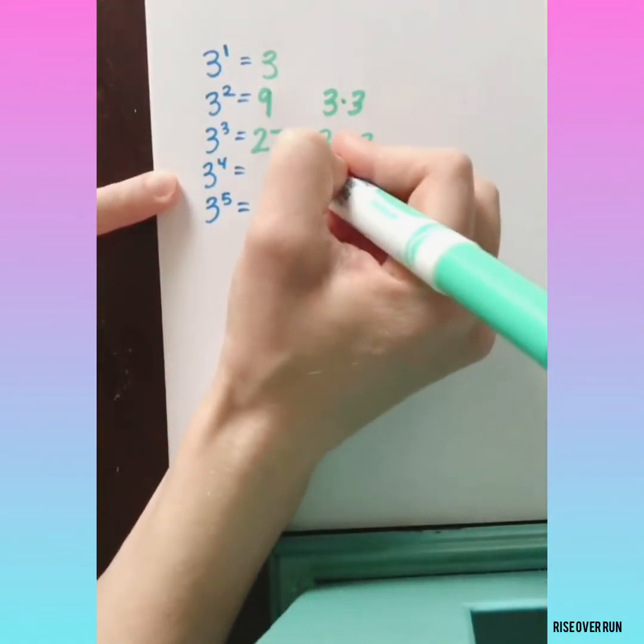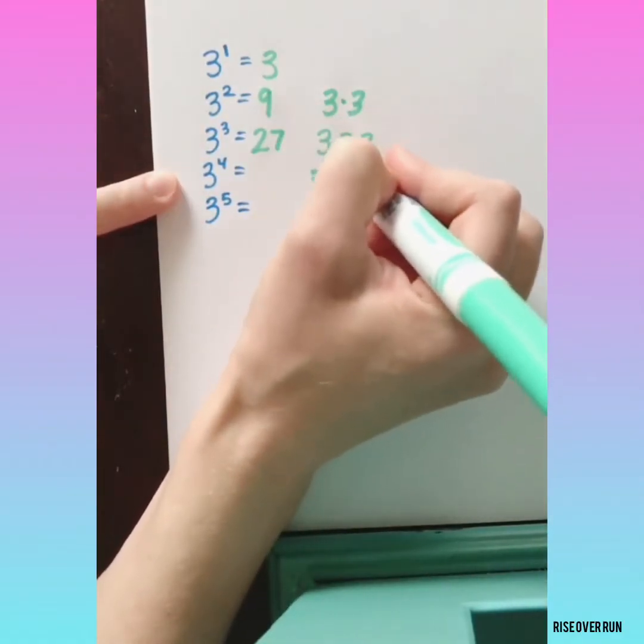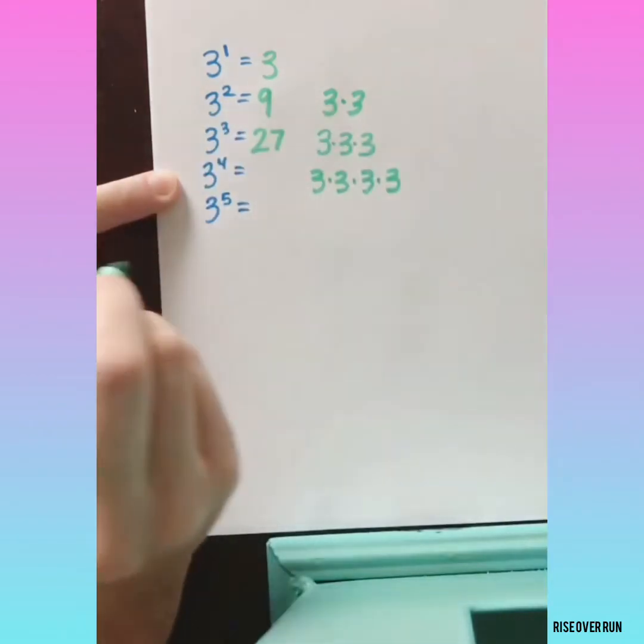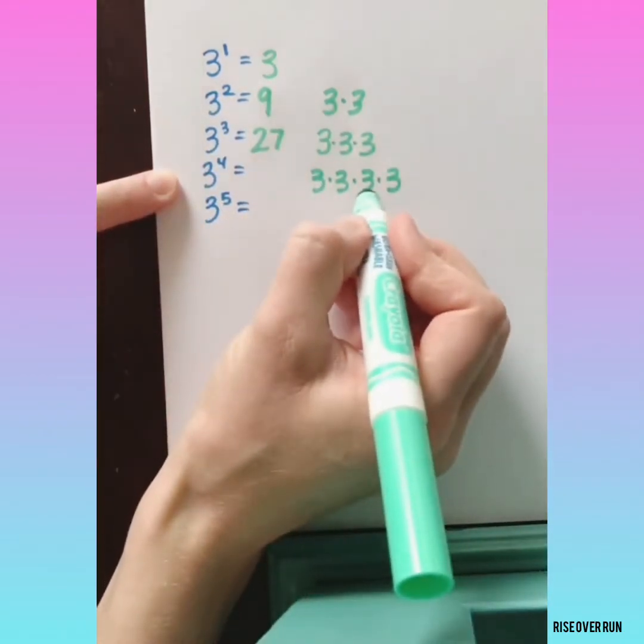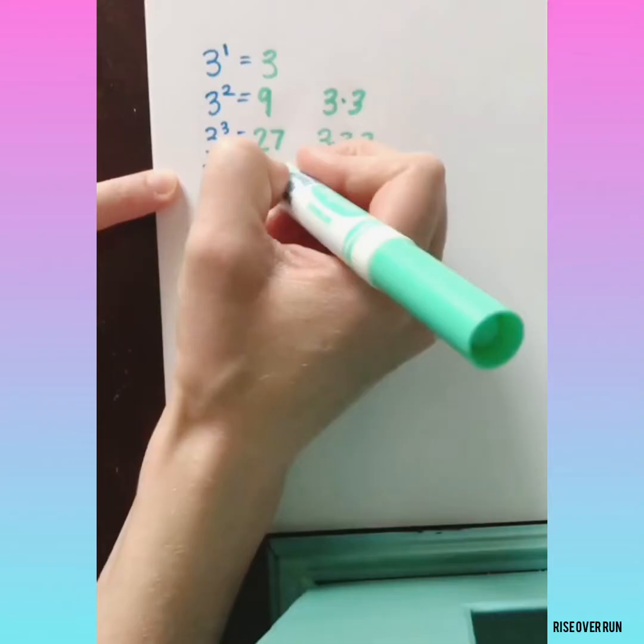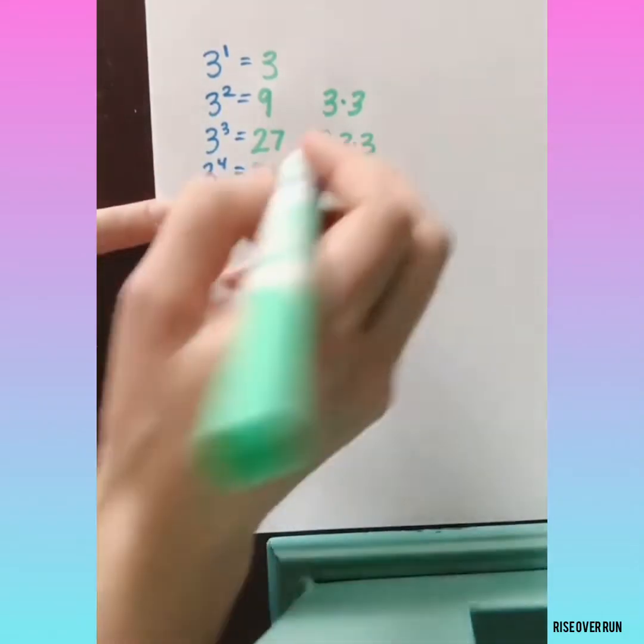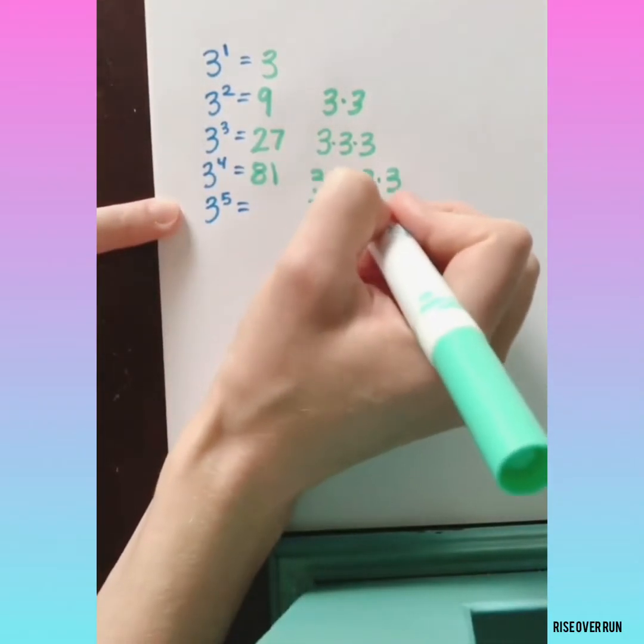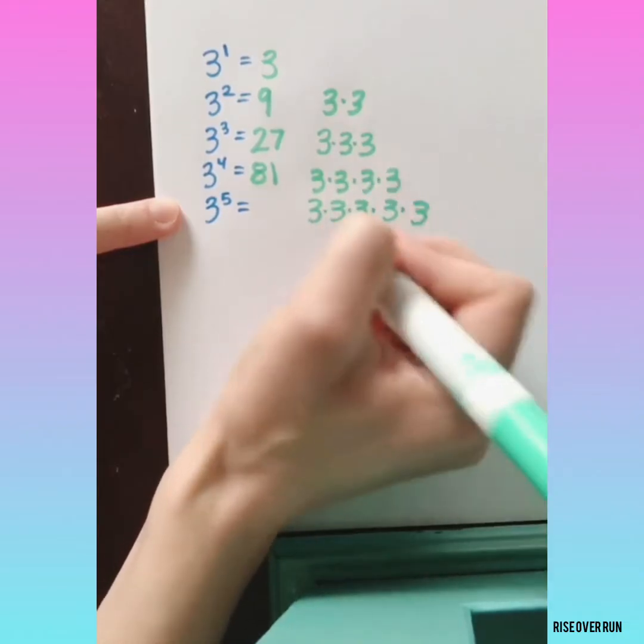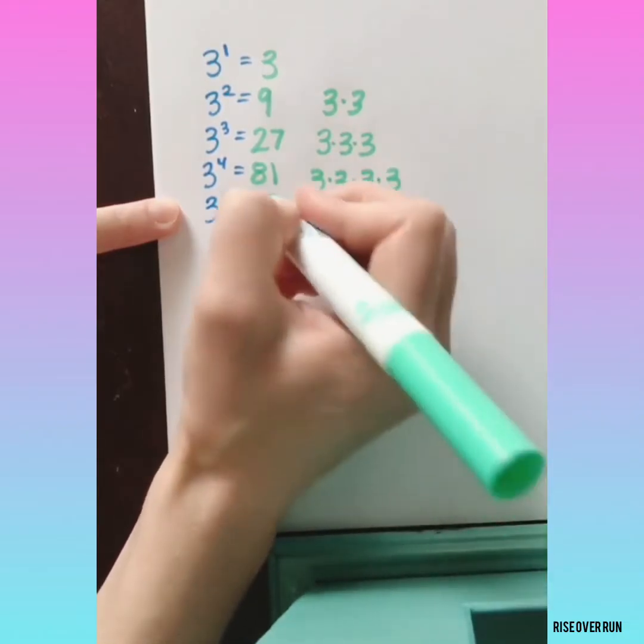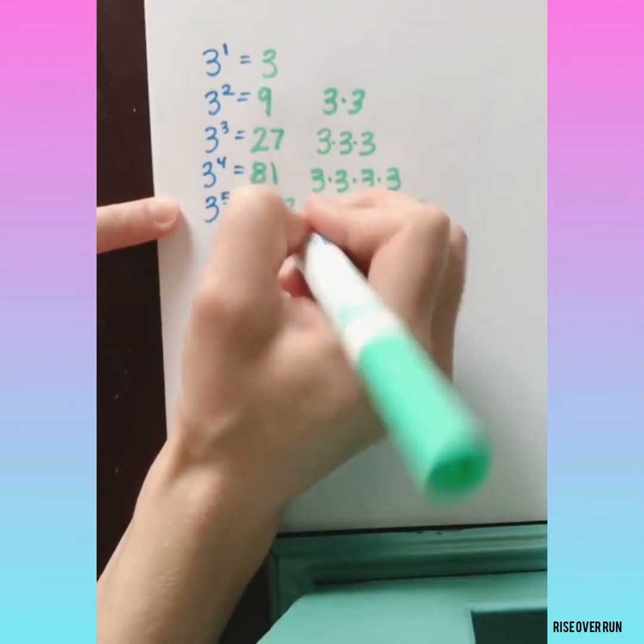3 to the fourth power, we're multiplying 3 by itself 4 times. So we know that's 27 times 3 is 81. 3 to the fifth power, I knew that was 81 times 3 is 243.